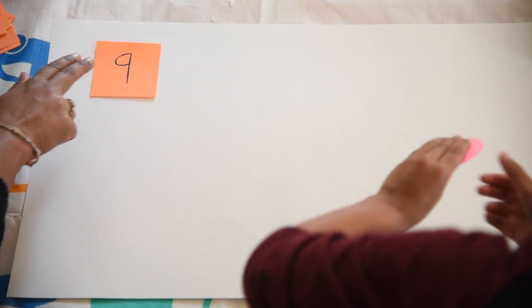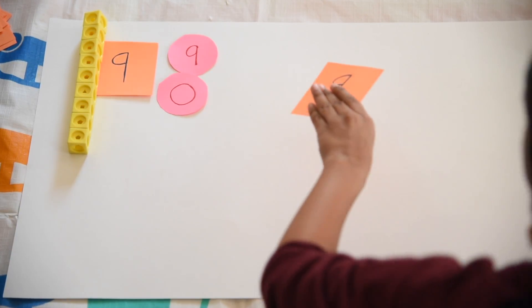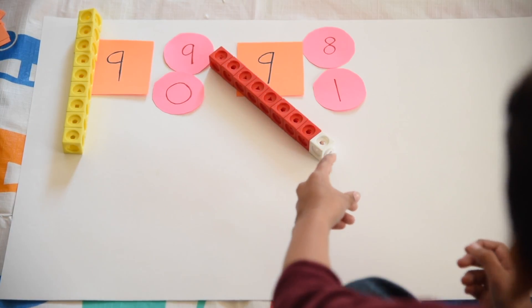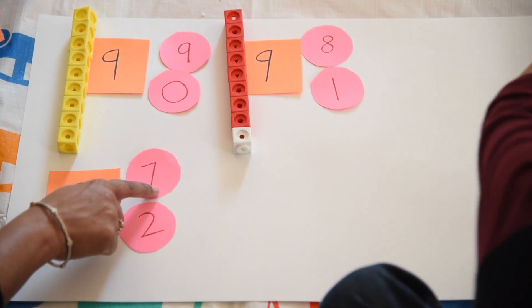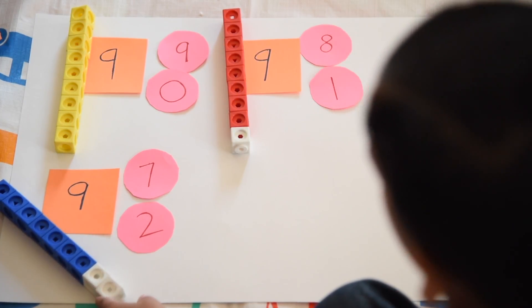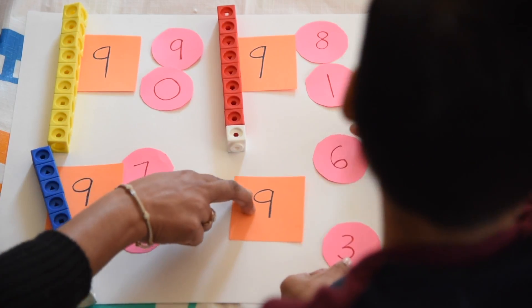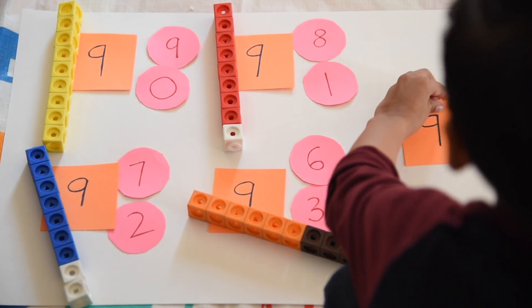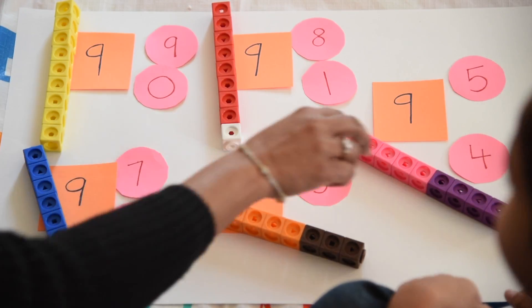Let's do the number bond of 9. The first way to make 9 is 9 and 0 — here is 9 yellow. The second way to make 9 is 8 and 1 — here is 8 red and 1 white. The third way to make 9 is 7 and 2 — here is 7 blue and 2 white. The fourth way to make 9 is 6 and 3 — here is 6 orange and 3 brown. The fifth way to make 9 is 5 and 4 — here is 5 pink and 4 purple. Great job.